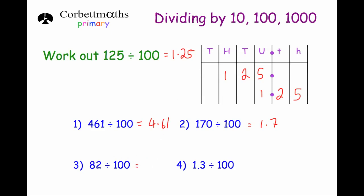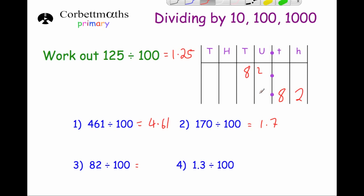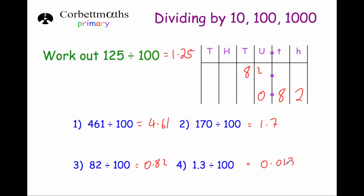For 82 divided by 100, the digits get 100 times smaller and move two columns to the right. The 8 in tens moves to tenths and the 2 in units moves to hundredths, so the answer is 0.82. Finally, if we divide 1.3 by 100, the digits move two places to the right — the 1 moves from units to tenths to hundredths — so the answer is 0.013.